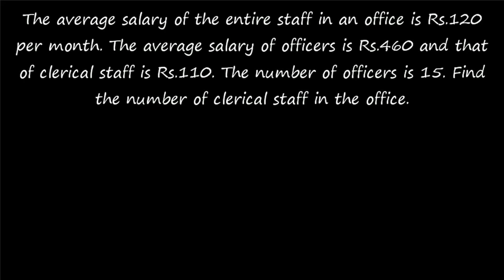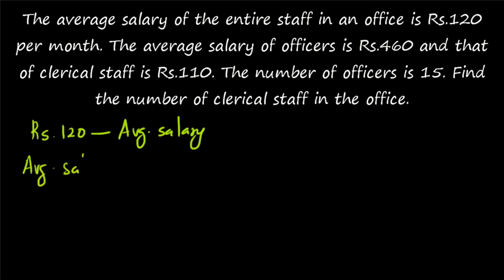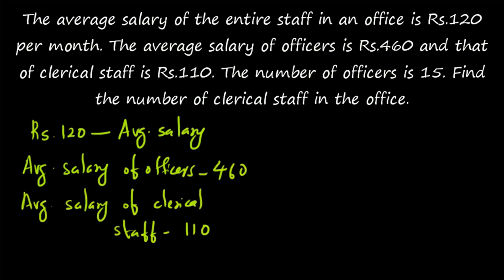So what is the given question? The average salary of the entire staff in the office is rupees 120. The entire staff consists of officers and clerical staff. The average salary of officers is rupees 460 and the average salary of clerical staff is rupees 110. Here also there is a total: the average salary of the total office is 120. The average salary of officers and of clerical staff are given. So here also you can use the principle of allegation.